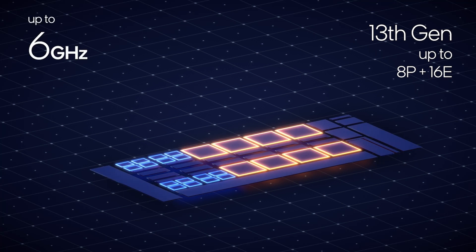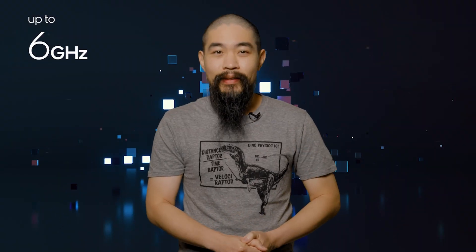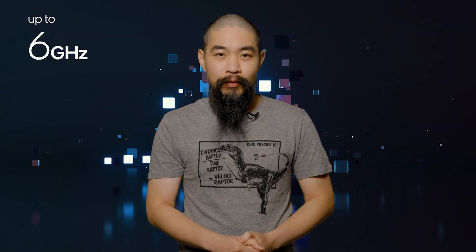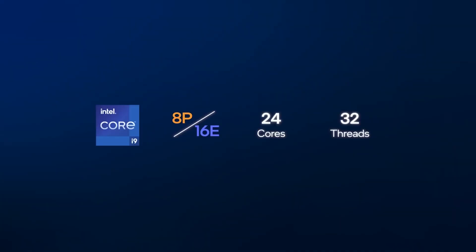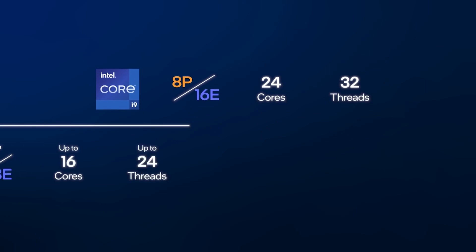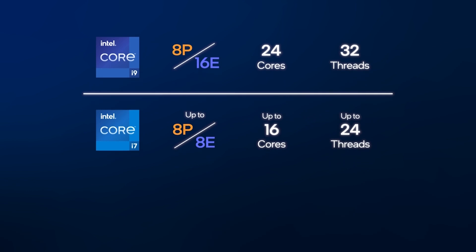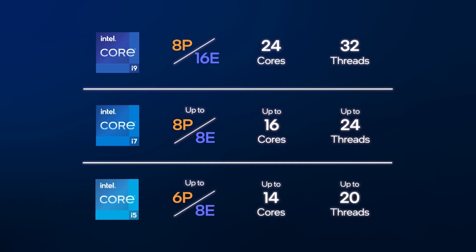That, at 6 GHz peak turbo frequency, makes it the world's fastest desktop processor. It's not just the top-line SKUs getting loaded up with cores either. In Raptor Lake desktop chips, you'll find Core i9, Core i7, and even Core i5 models packing in those E-cores.